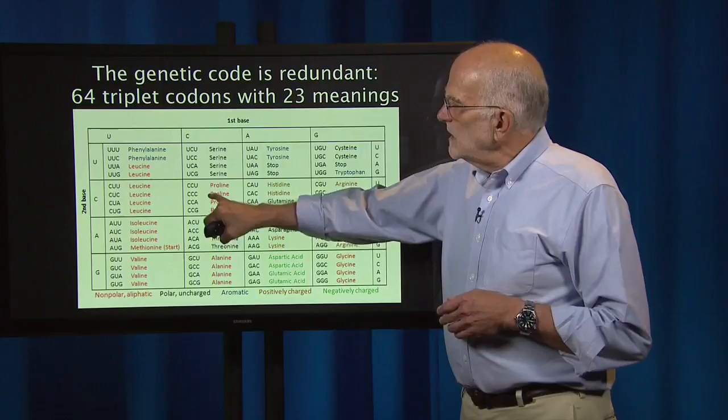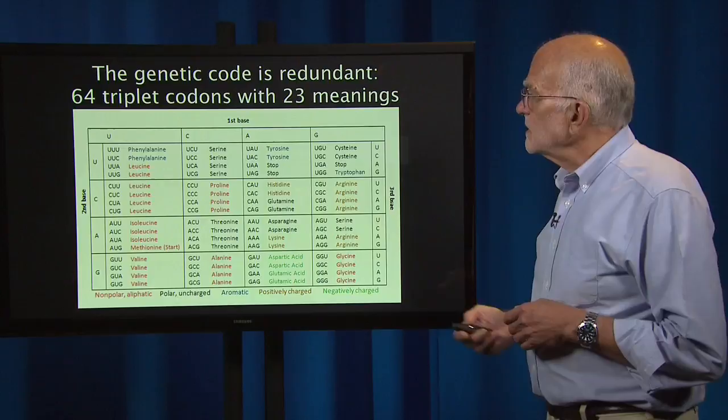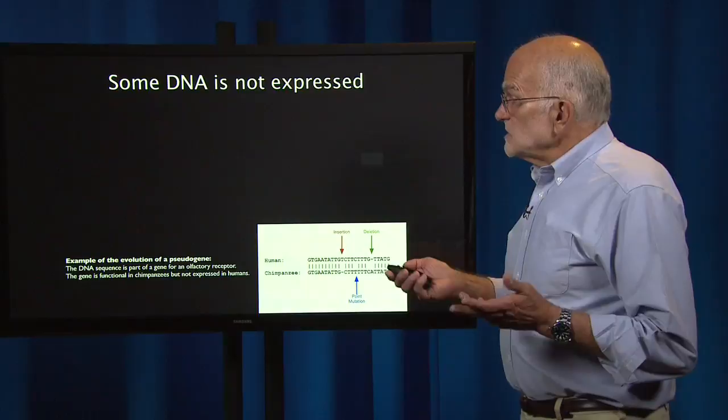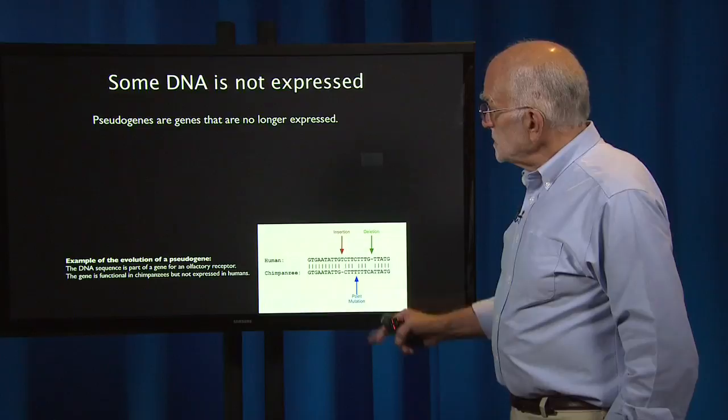It is the third position in the codon that can be different. Some DNA is also not expressed — pseudogenes, for example, are genes that are no longer expressed. Here we have an example of a pseudogene.